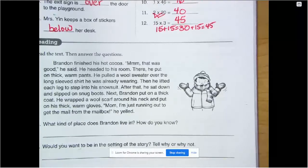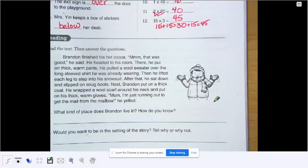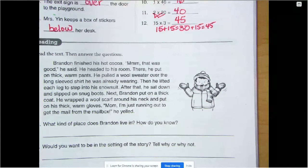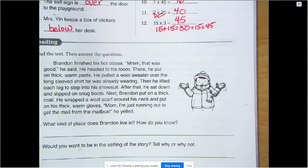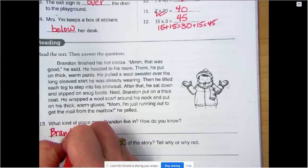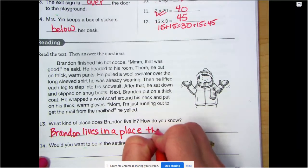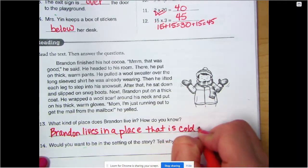We were reading about Brandon. Brandon finished his hot cocoa. Mmm, that was good, he said. He headed to his room. There he put on thick, warm pants. He pulled a wool sweater over the long-sleeved shirt he was already wearing. Then he lifted each leg to step into his snowsuit. After that, he sat down and slipped on snug boots. Next, Brandon put on a thick coat. He wrapped a wool scarf around his neck and put on his thick, warm gloves. Mom, I'm just running out to get the mail from the mailbox, he yelled. What kind of place does Brandon live in? Brandon lives in a place that is cold and snowy.